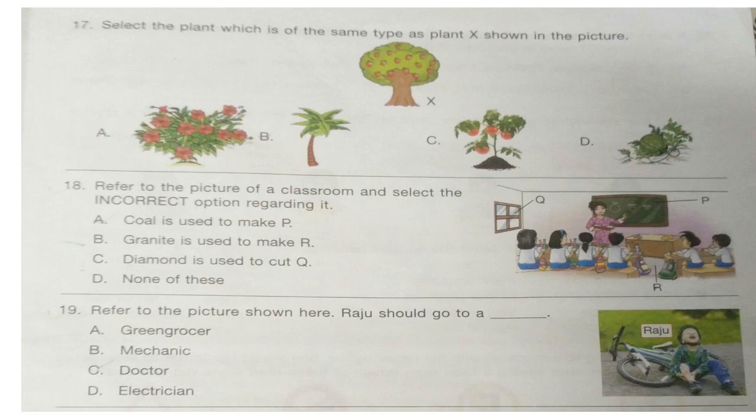Question 18. Refer to the picture of a classroom and select the incorrect option regarding it. A. Coal is used to make P. B. Granite is used to make R. C. Diamond is used to cut R. D. None of these.